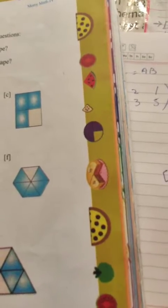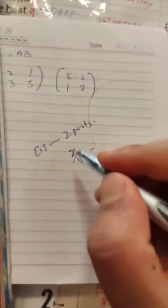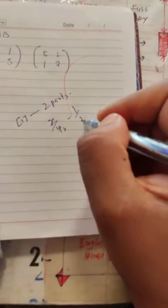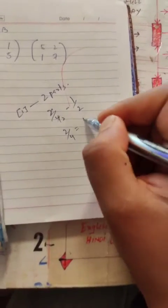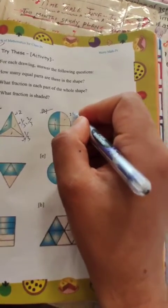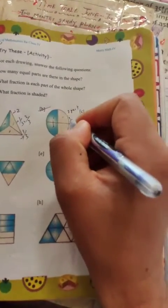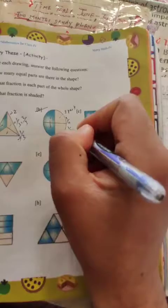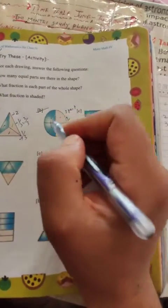Two by four, 2/4. Two ones are two, so 2 by 4. What fraction is shaded? 2 by 4.